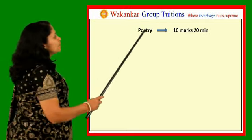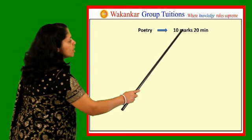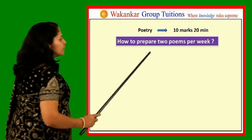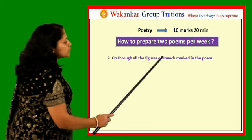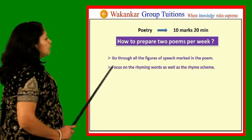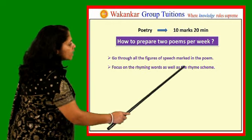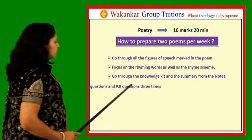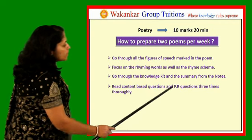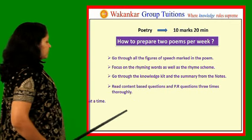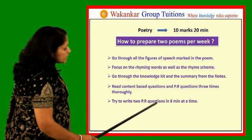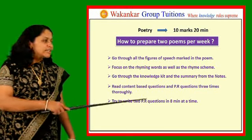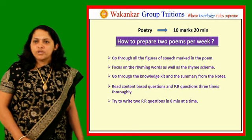Now let us see what exactly is there for the poetry section. Poetry section carries 10 marks; you should complete these 2 questions in 20 minutes. How to prepare 2 poems per week: go through all the figures of speech marked in the poem, focus on the rhyming words as well as the rhyme scheme, go through the knowledge kit and the summary from the notes. Read the content-based questions and PR questions 3 times thoroughly. Try to write 2 PR questions in 8 minutes at a time. You have to understand that these content-based questions and PR questions are very important for the poetry section.